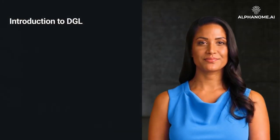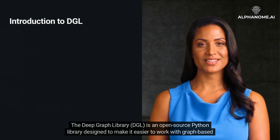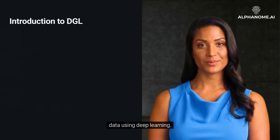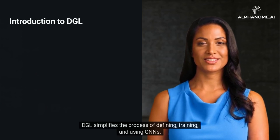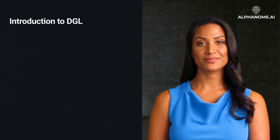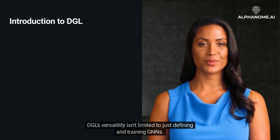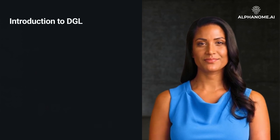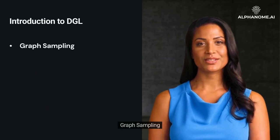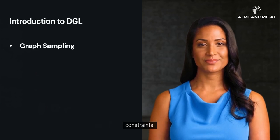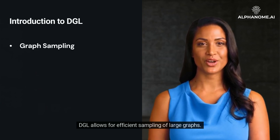Introduction to DGL. The Deep Graph Library, DGL, is an open-source Python library designed to make it easier to work with graph-based data using deep learning. DGL simplifies the process of defining, training, and using GNNs. It works seamlessly with popular deep learning frameworks like PyTorch and TensorFlow. DGL's versatility isn't limited to just defining and training GNNs — it offers graph sampling. For massive graphs, it's often impractical to use the entire graph for training due to computational constraints. DGL allows for efficient sampling of large graphs.